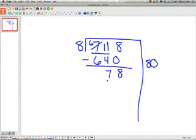So repeat the process. Can 8 go into 7? No, it cannot. Extend my line over. Can 8 go into 78? Yes, it can, because it's bigger. How many times?